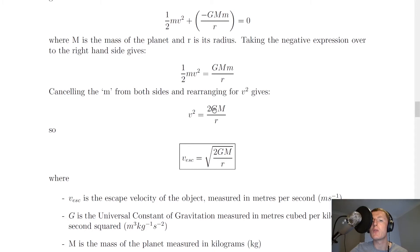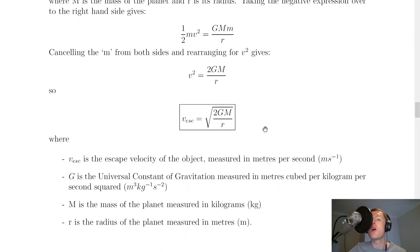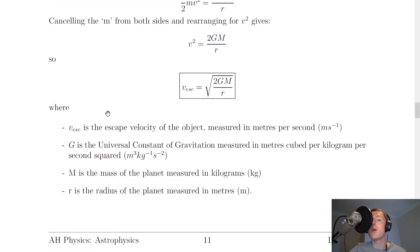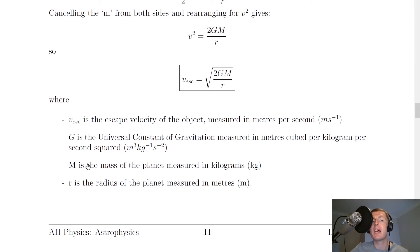We get v squared is equal to 2GM over r, which arises by multiplying both sides by 2 to get rid of that half on the left-hand side. Because we want escape velocity and not velocity squared, we take the square root of both sides, giving us v_escape equals the square root of 2GM over r. Here v_escape is the escape velocity in meters per second, G is the universal constant of gravitation in meters cubed per kilogram per second squared, capital M is the mass of the planet in kilograms, and r is the radius of the planet in meters.